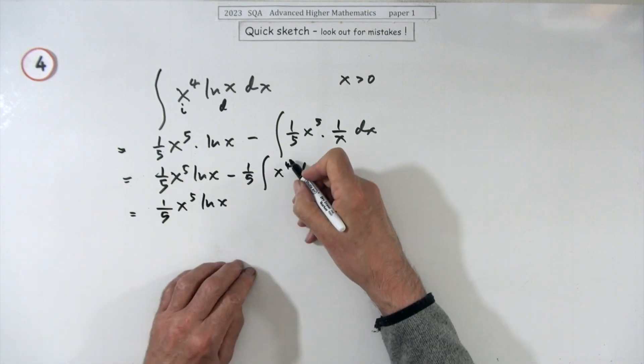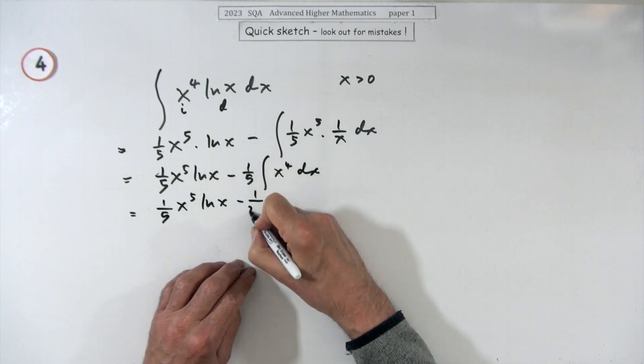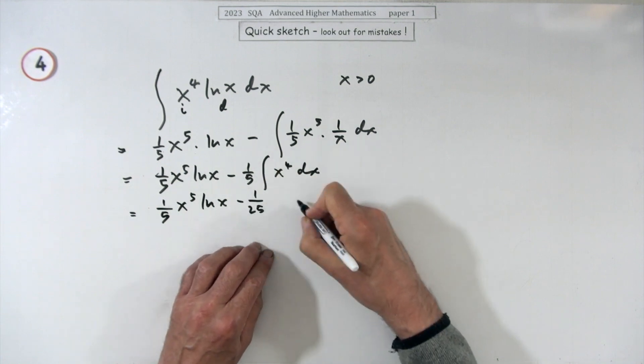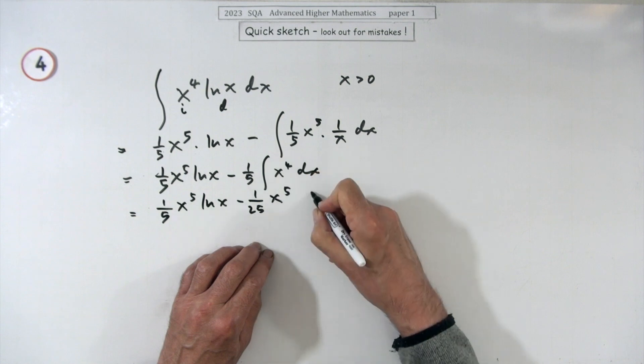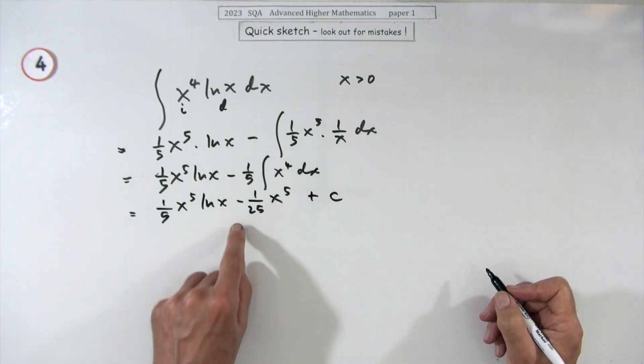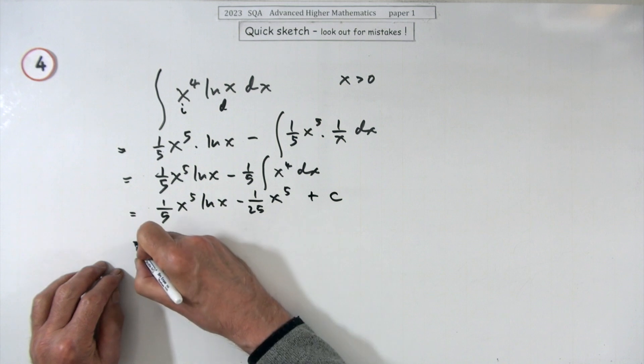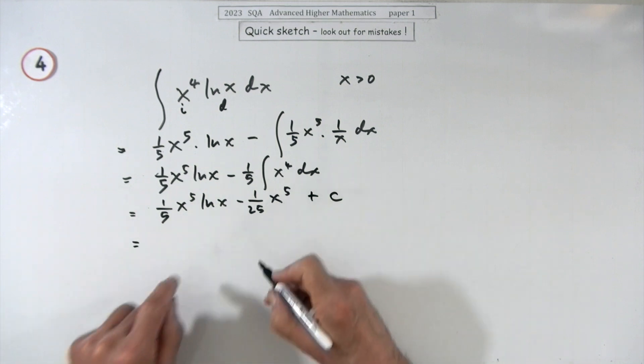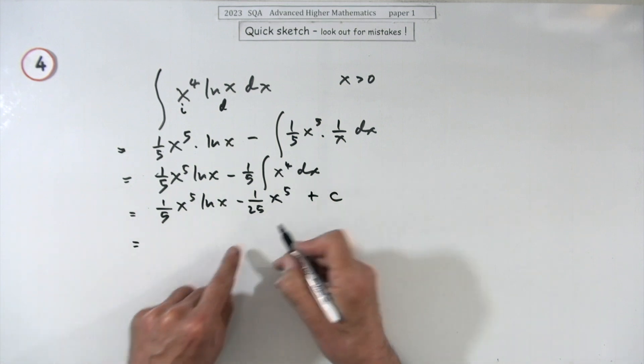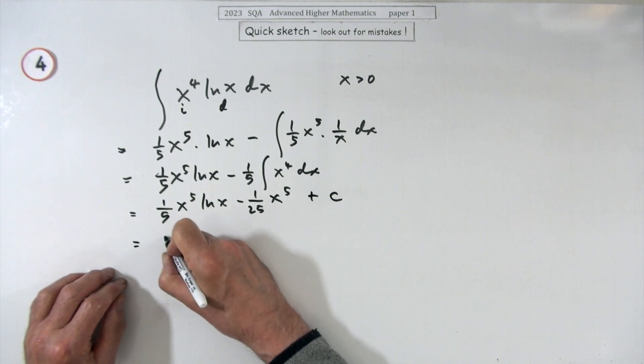x to the five divided by five, so it's down to a twenty-fifth of x to the five plus C, which I suppose would do for the answer. Or you can say there are a few replications there: you could take out x to the five, you could take out a twenty-fifth.